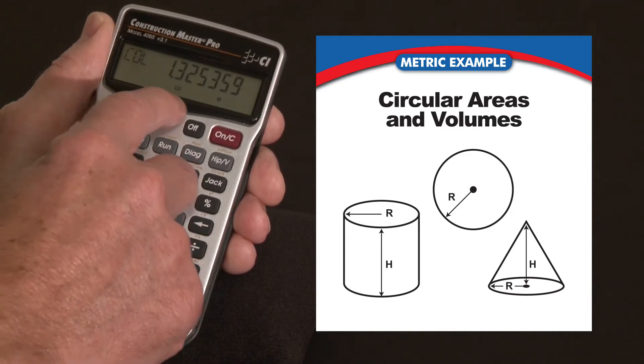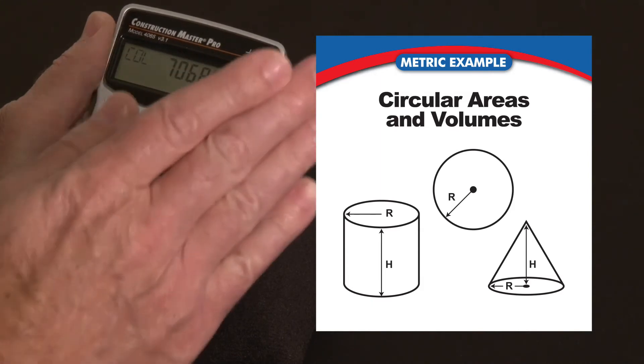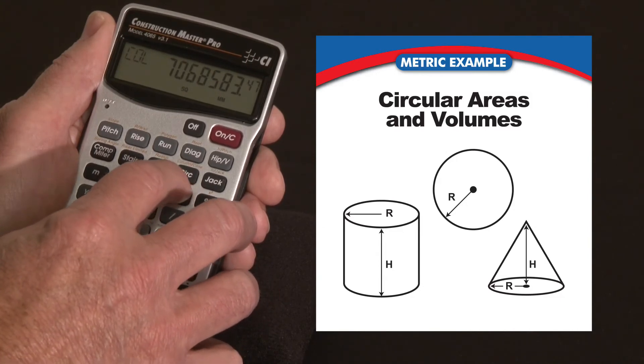So a column volume, there's our 1.3 cubic meters of a column with those dimensions. Press it again, there's the surface area, so if I had to coat or treat, do something to the outside all the way around that column.